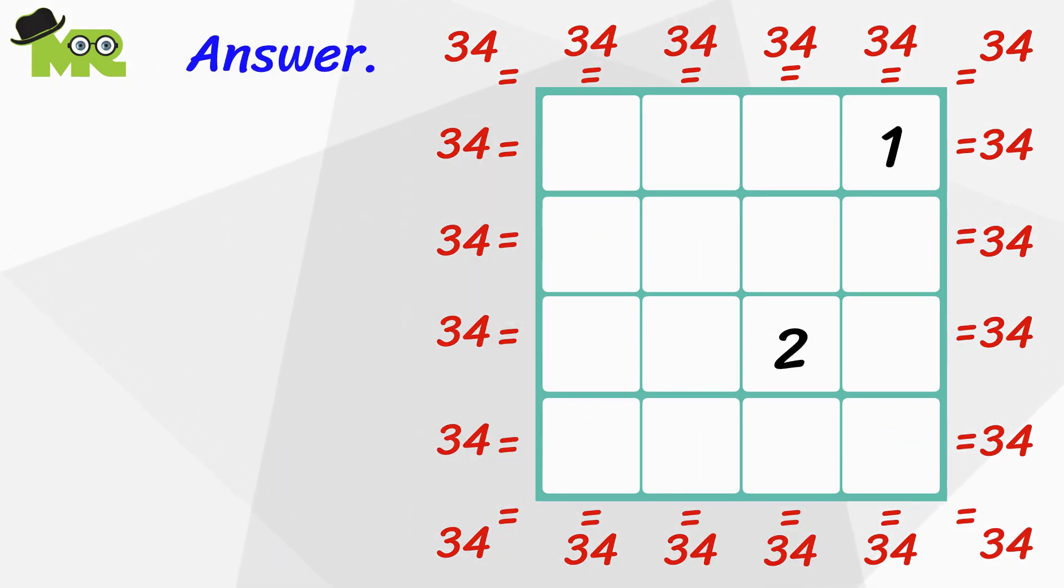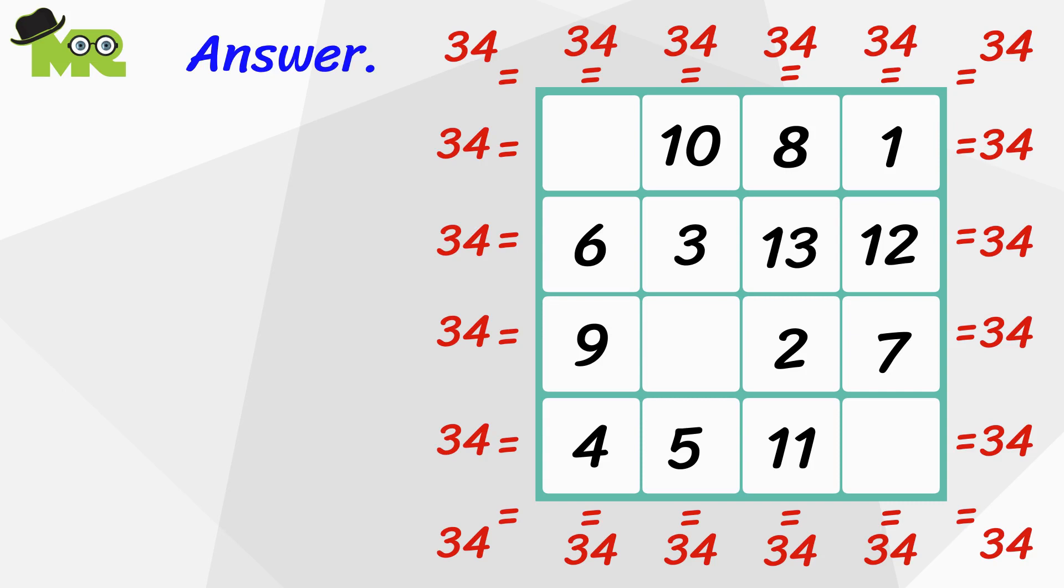Place 1 here, 2 here, 3 here, 4 here, 5 here, 6 here, 7 here, 8 here, 9 here, 10 here, 11 here, 12 here, 13 here, 14 here, 15 here, and 16 in this last box.